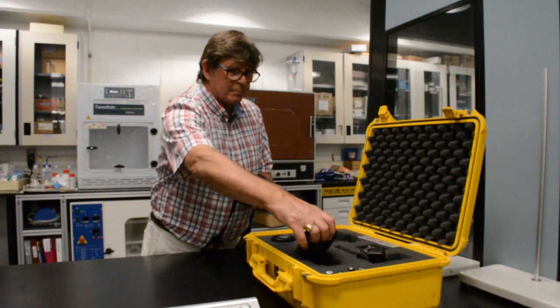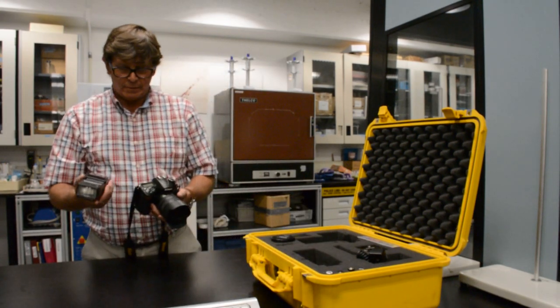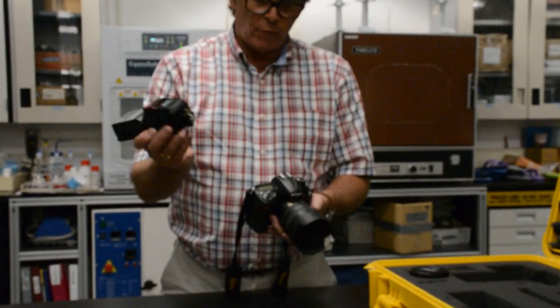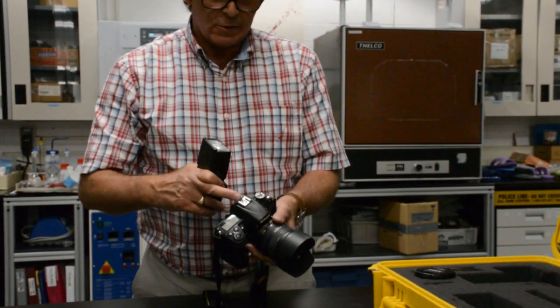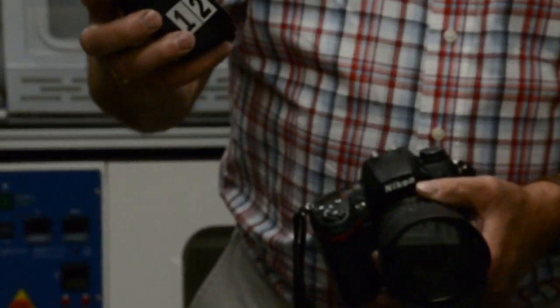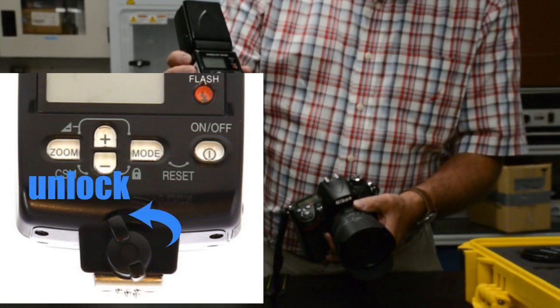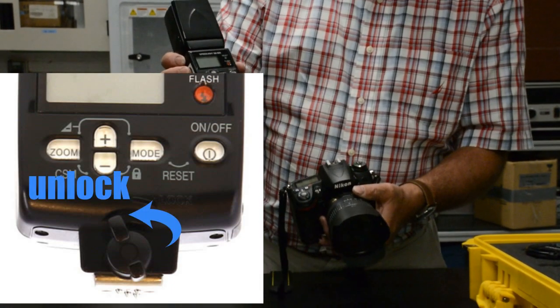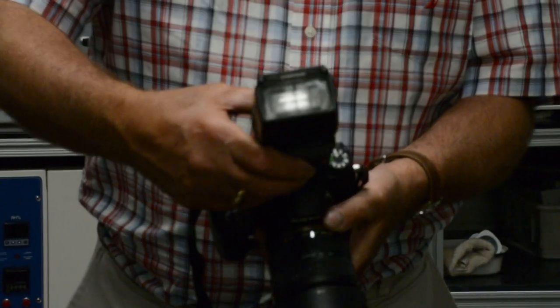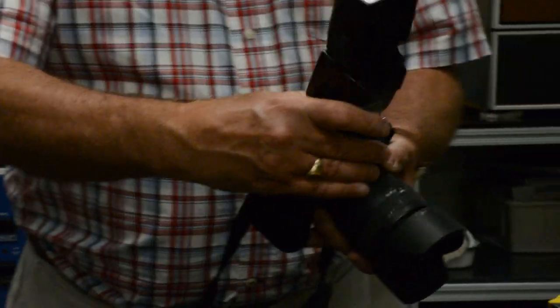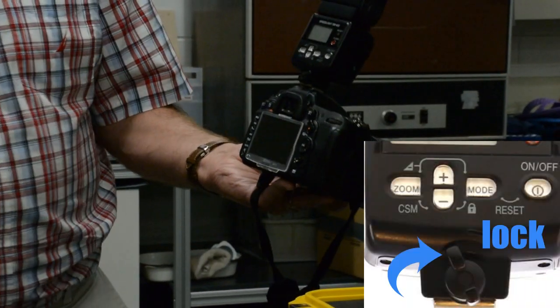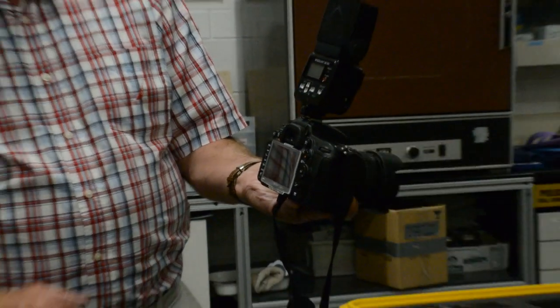Mounting the flash unit onto the camera, on the underside of the flash unit is the foot, and it gets attached to the accessory shoe on top of the camera. Ensuring that on the backside of the flash unit, that it is in the unlocked position, slide the shoe, or the foot, onto the shoe, so it fully engages forward, and then turn the locked position on like such.